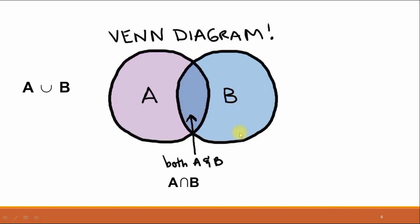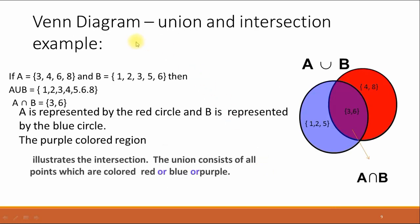Now, for example, how to represent the union and intersection of two sets using a Venn diagram. We have set A containing the elements 3, 4, 6, and 8, and another set B containing the elements 1, 2, 3, 5, and 6. Then the union of these two sets will be 1, 2, 3, 4, 5, 6, and 8. The intersection of these two sets contains the elements 3 and 6.